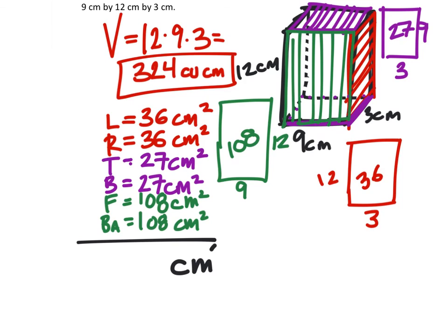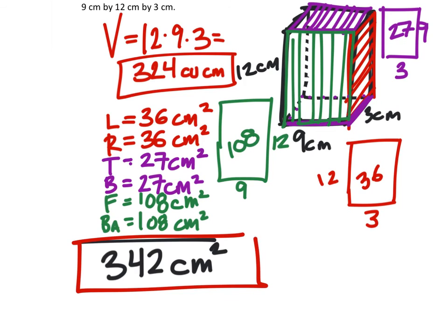Our final answer will be in centimeters squared, so we'll put that there. And for the surface area, I get 342 centimeters squared. And we have both. That's all we need.